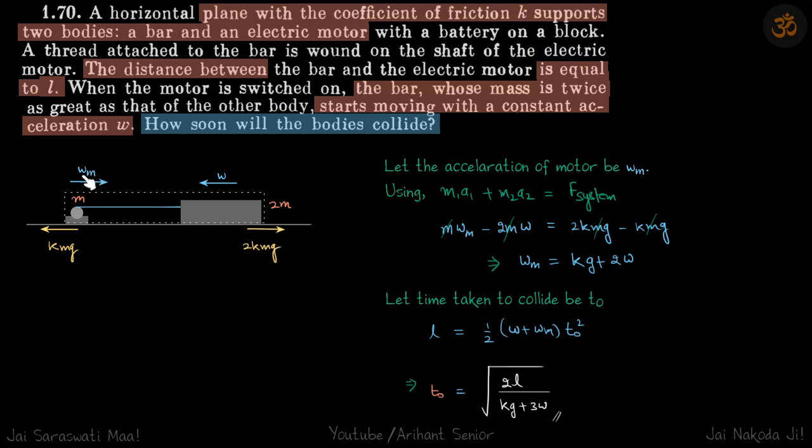So to find WM, we are going to consider this whole thing as a system. So let's say acceleration on the motor is WM, and on this whole system, we can write M1A1 plus M2A2 is equal to net force on the system.